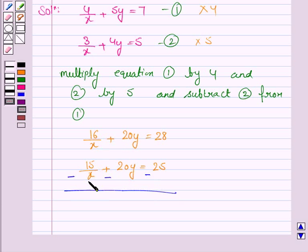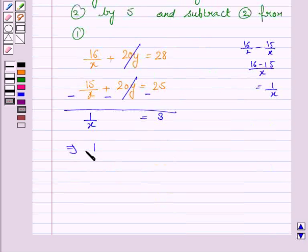16/x minus 15/x is 1/x. Taking LCM will have 16 minus 15 upon x. So it is 1/x, plus 20y gets cancelled with minus 20y, and 28 minus 25 is 3. This implies 1/x = 3, so x = 1/3.